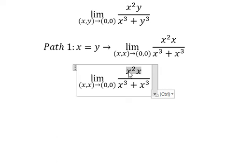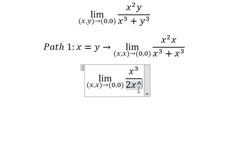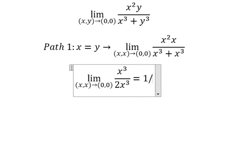So this becomes x to the power of 3. This becomes 2x to the power of 3. We simplify the numerator and denominator. You get 1 over 2.